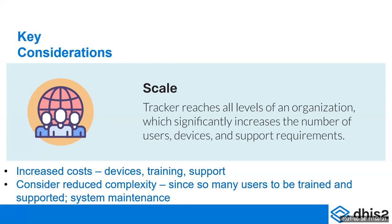If you are trying to do scale, you should probably consider reduced complexity, because you have so many users who you have to train and support, and you also have system maintenance. One of the biggest issues with tracker going to national scale is the user support and the training. With aggregate data, you just need to support maybe the data manager — one data manager at a facility, or even when data was done at the district level, you just needed to support that one district health data manager.